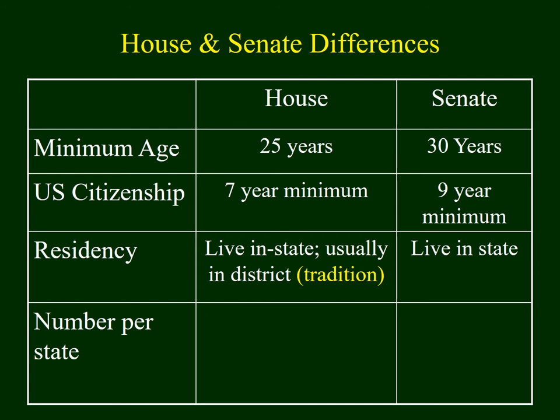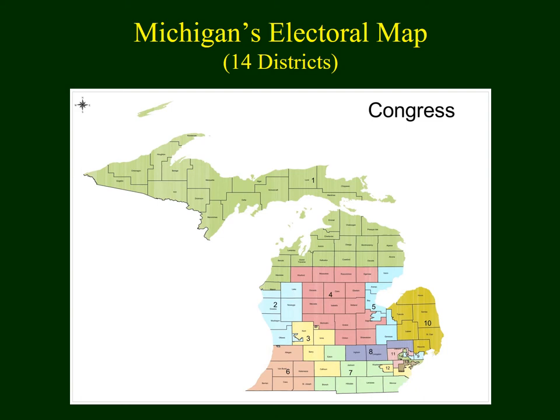There's also a residency requirement outlined by the Constitution — it's actually the same for the House and the Senate. However, based upon tradition in the House of Representatives, those reps generally live in the district they are representing, but it's not required by the Constitution. West Shore Community College is located in Michigan's second congressional district. Usually people live in those districts they're representing because they know the strengths, the weaknesses, and the people there.